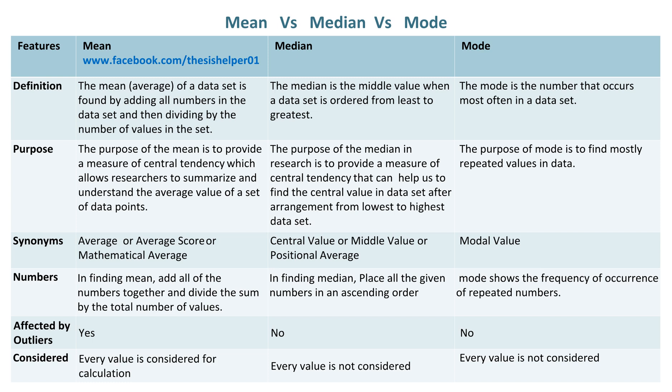In finding mean, add all of the numbers together and divide the sum by the total number of values. In finding median, place all the given numbers in an ascending order. Mode shows the frequency of occurrence of repeated numbers.